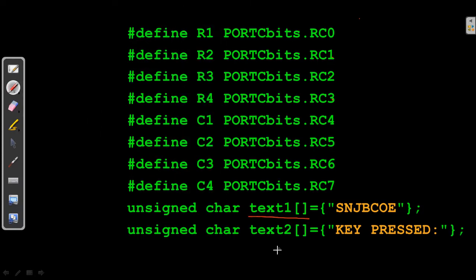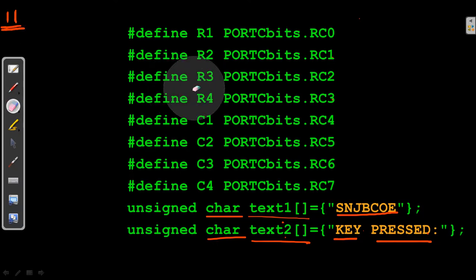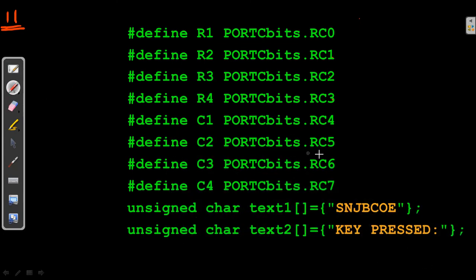After that, I am taking two character arrays. The first array has the data 'NGB COE' and the second array has 'Key Pressed:'. There are 11 characters in the second string. Line 1 of the LCD will permanently display 'NGB COE', and on line 2, it will permanently display 'Key Pressed:'. Whatever key is pressed will be displayed after that on row number 2.